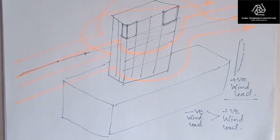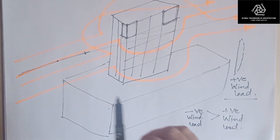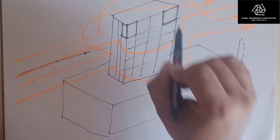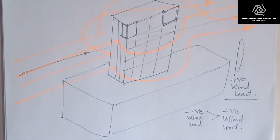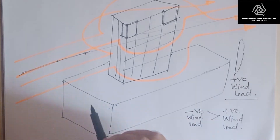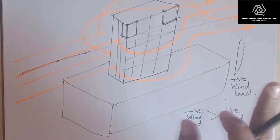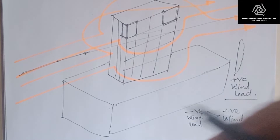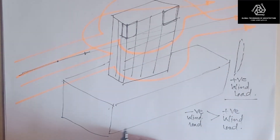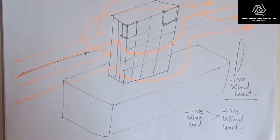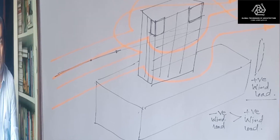There is a misconception that the people inside the building, or the HVAC and air conditioning systems, cause negative wind load. That is not correct. There is no such thing as negative wind load being exerted from within the building. Anything and everything related to wind load is always from the external periphery.